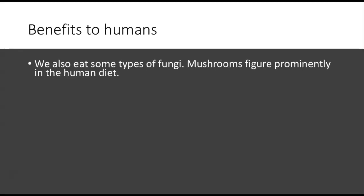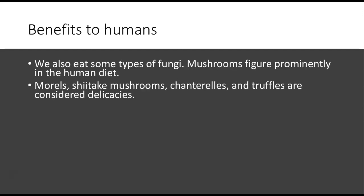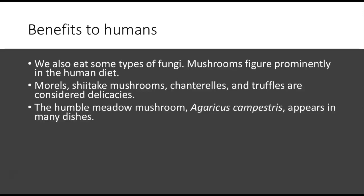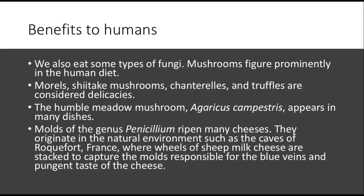We eat some types of fungi — mushrooms figure prominently in the human diet. There are also morels, shiitake mushrooms, chanterelles, and truffles, which are considered delicacies by many people. The common button mushroom, Agaricus campestris, appears in many dishes. Molds of the genus Penicillium ripen many cheeses, originating in natural environments such as the caves in France where wheels of sheep milk cheese are stacked and capture the molds responsible for the blue veins and pungent taste of the cheese.